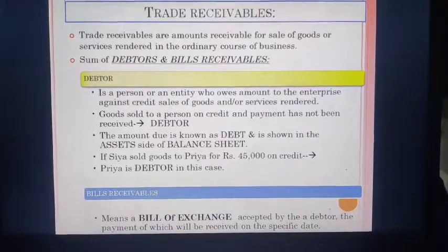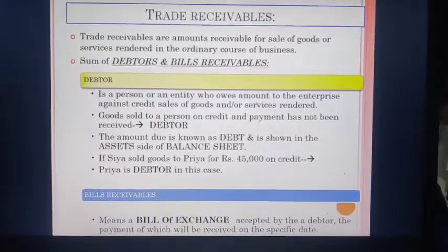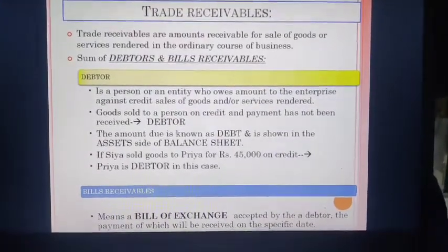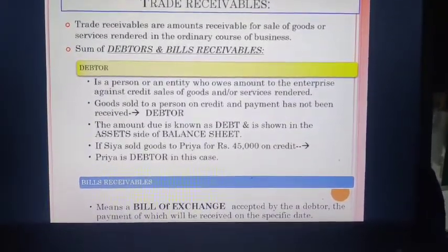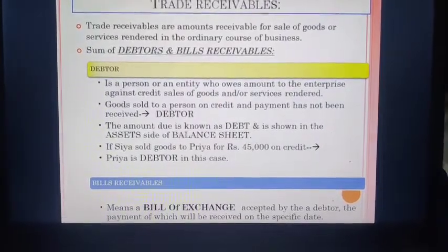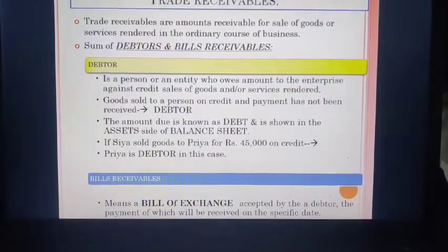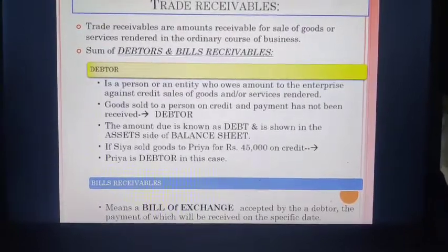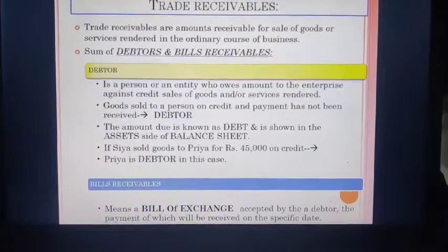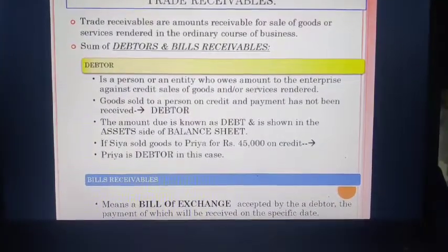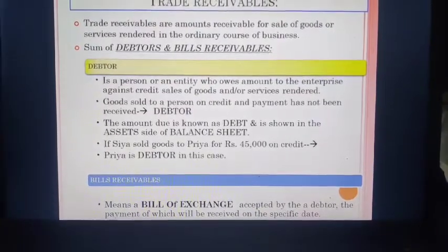The next term is trade receivables. As the word 'receivables' denotes, something is about to be received. Trade receivables are amounts receivable for sale of goods or services rendered in the ordinary course of business. Trade receivables is basically the sum of debtors and bills receivable. A debtor is a person or entity who owes an amount to the enterprise against credit sale of goods and/or services rendered.